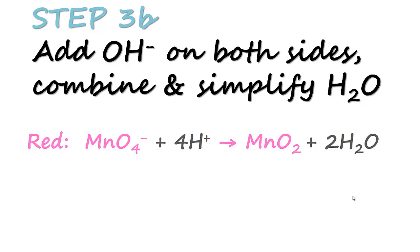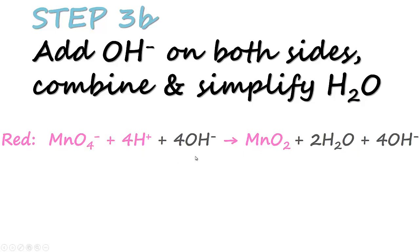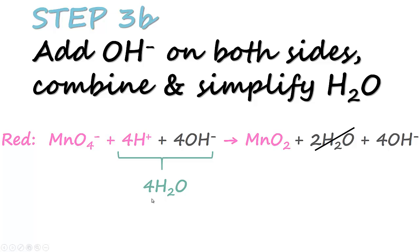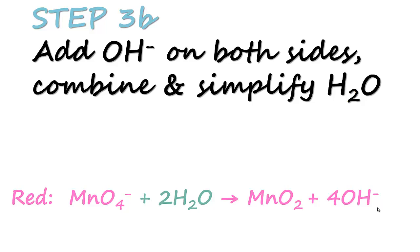Now we do the same for the reduction equation. From step 3A we have four H⁺, so we add four OH⁻ on both sides. After combining H⁺ and OH⁻ we get four H₂O, then we simplify the water terms. On the right hand side we have two H₂O and on the left hand side we have four H₂O, so after simplifying we end up with two H₂O on the left hand side. This gives us our final reduction half reaction.